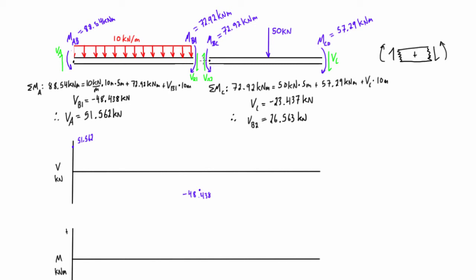The shear just to the right of point B — on the left end of the second span — is VB2, which was positive 26.563 kilonewtons. And the shear at the very end at C: we drew it in the positive sense but got a negative value, so it's negative 23.437 kilonewtons.